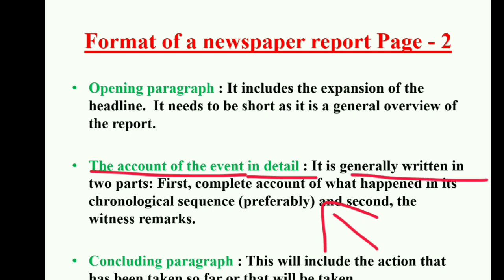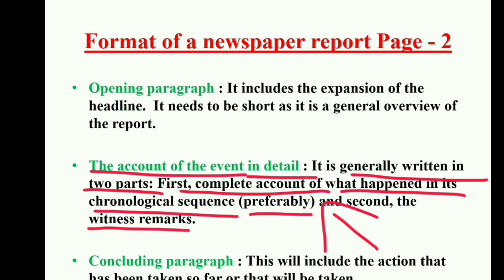The account is generally written in two parts: first, the complete account of what happened in chronological sequence; and second, the witness remark. During an accident, you mention the vehicles, the direction from where they were coming, if it was due to over-speeding, etc. Then you will mention the eyewitness account. If somebody had seen that particular accident happening, those eyewitness accounts will be written within inverted commas, or if you want to change it to report writing style, you may do that.